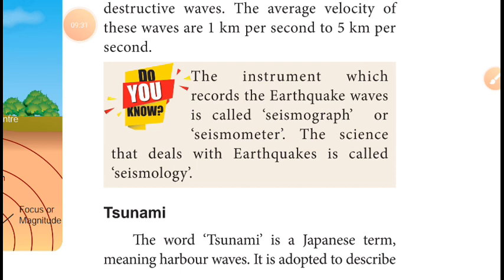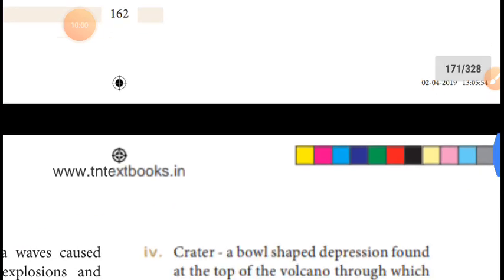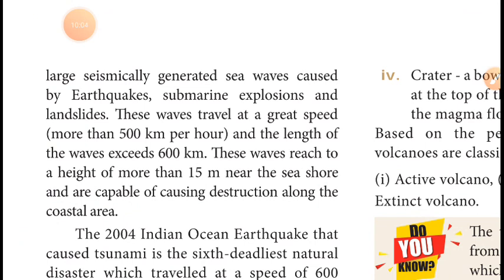The next important topic is tsunami. The word tsunami is a Japanese term meaning 'harbor wave.' It is used to describe a large, seismically generated sea wave. The main causes of a tsunami are: earthquake, submarine explosion — explosions that happen under the ocean — and landslides.